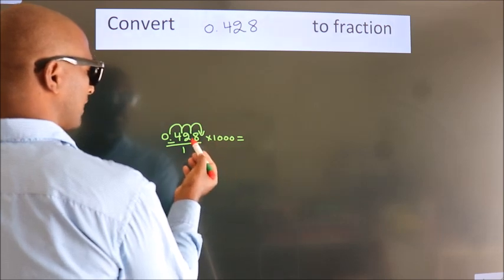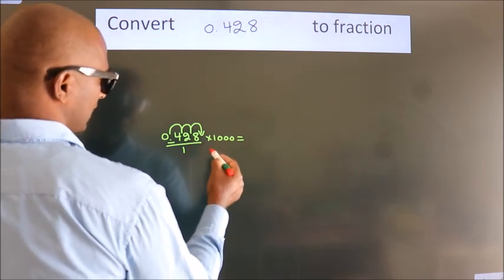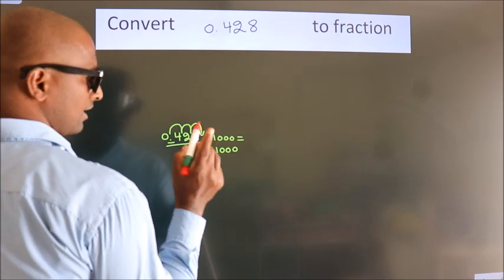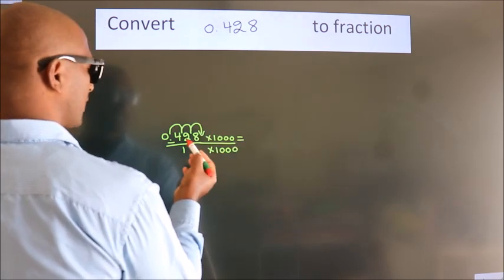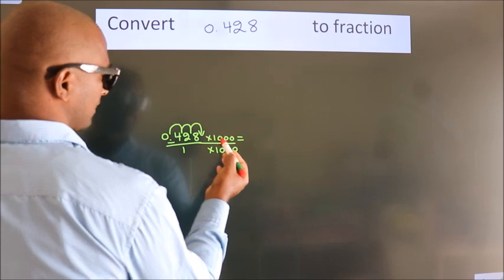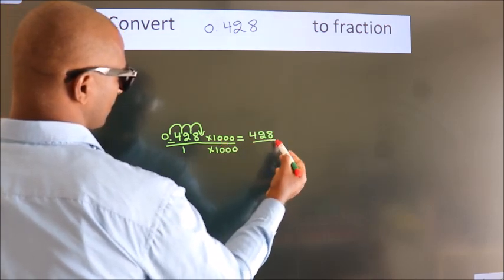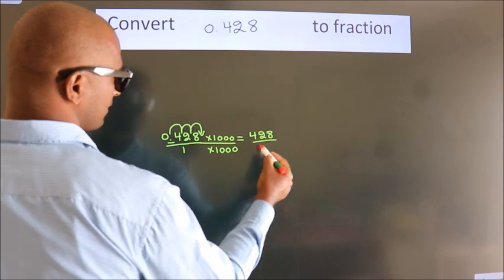Whatever number you are multiplying in the numerator, in the denominator also do the same. Next, 0.428 into 1000 equals 428. 1 into 1000 equals 1000.